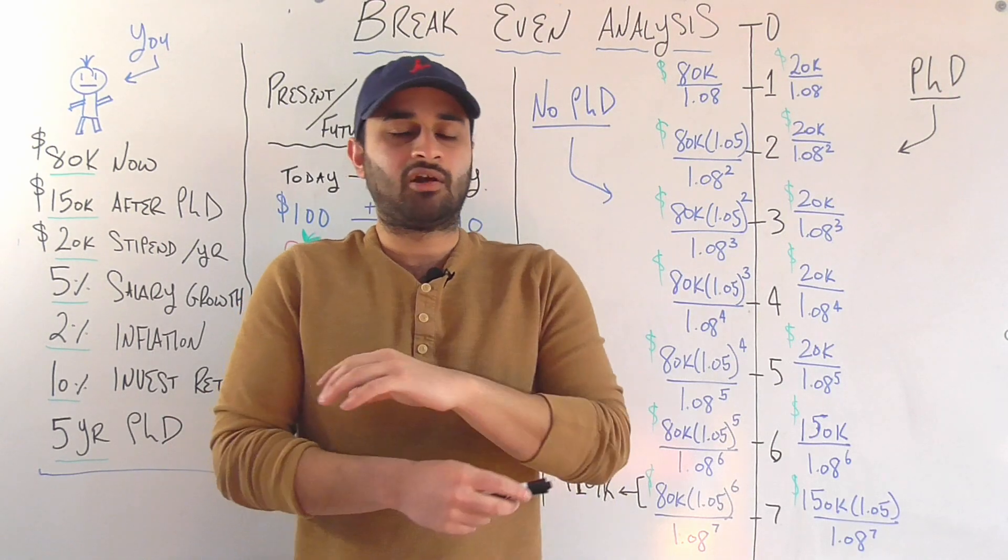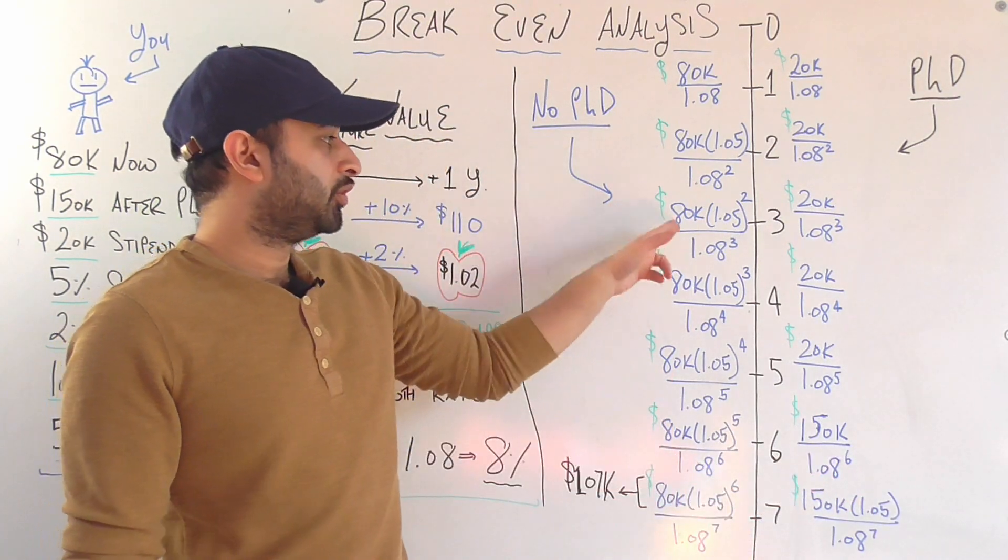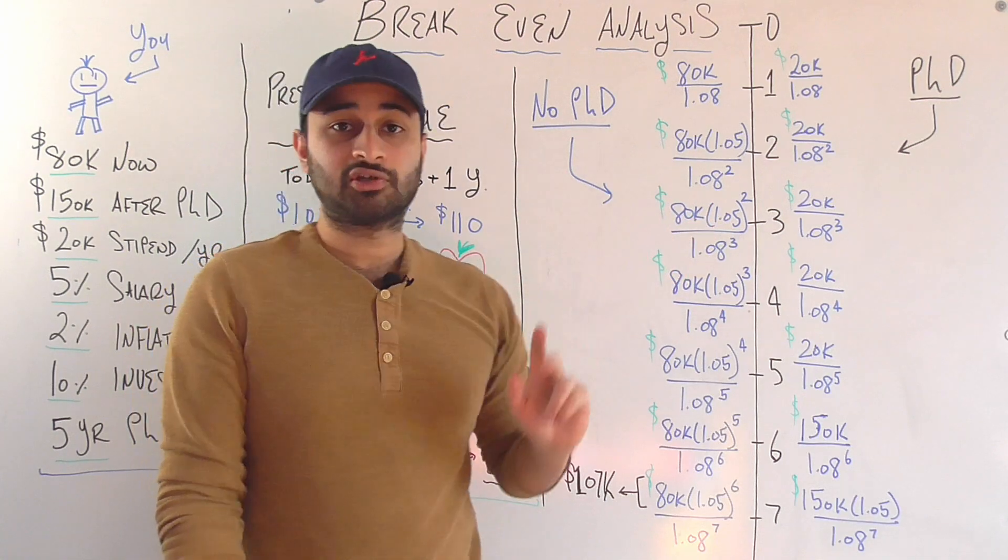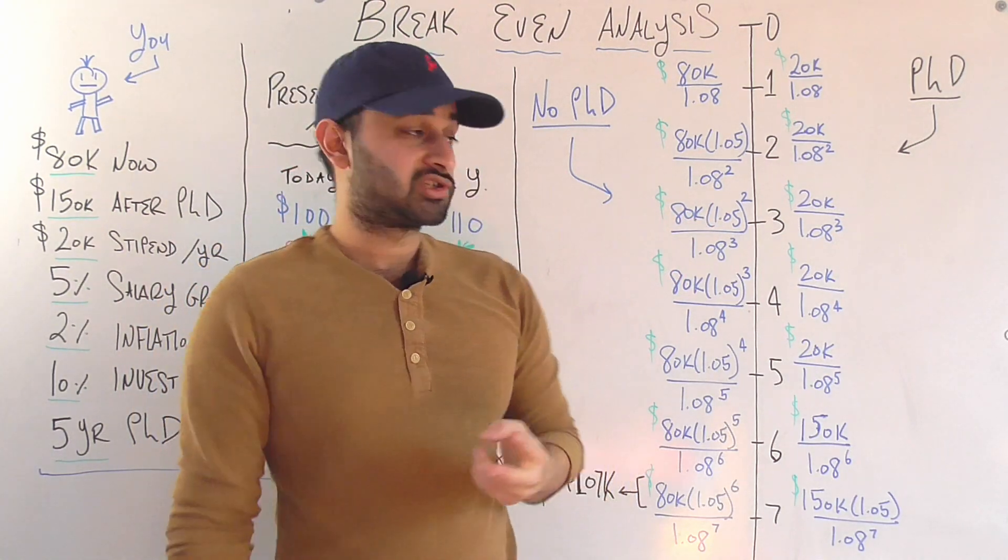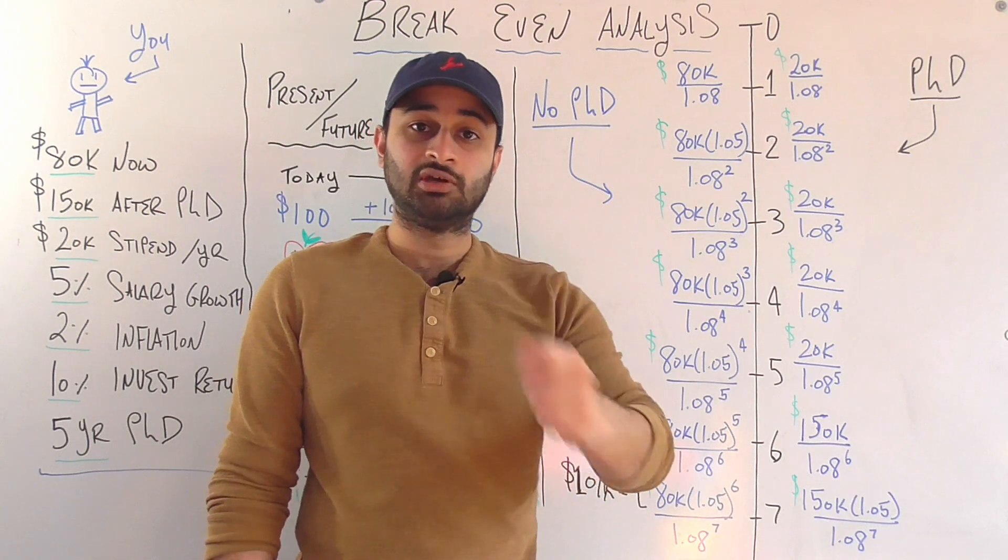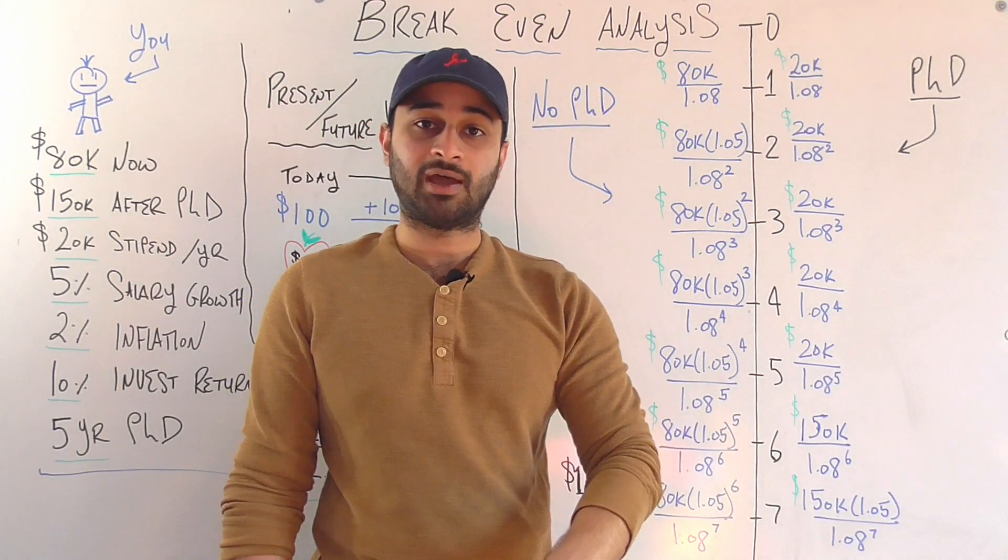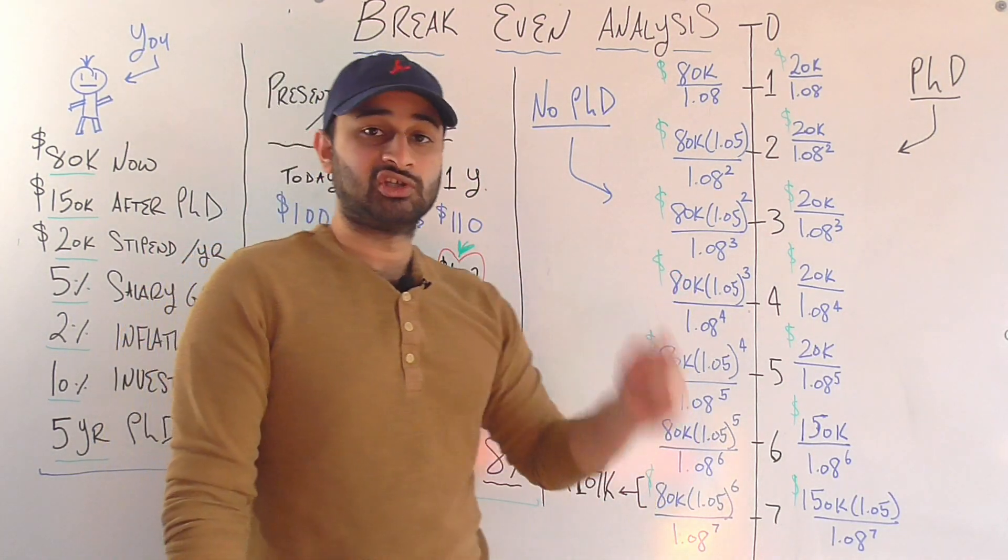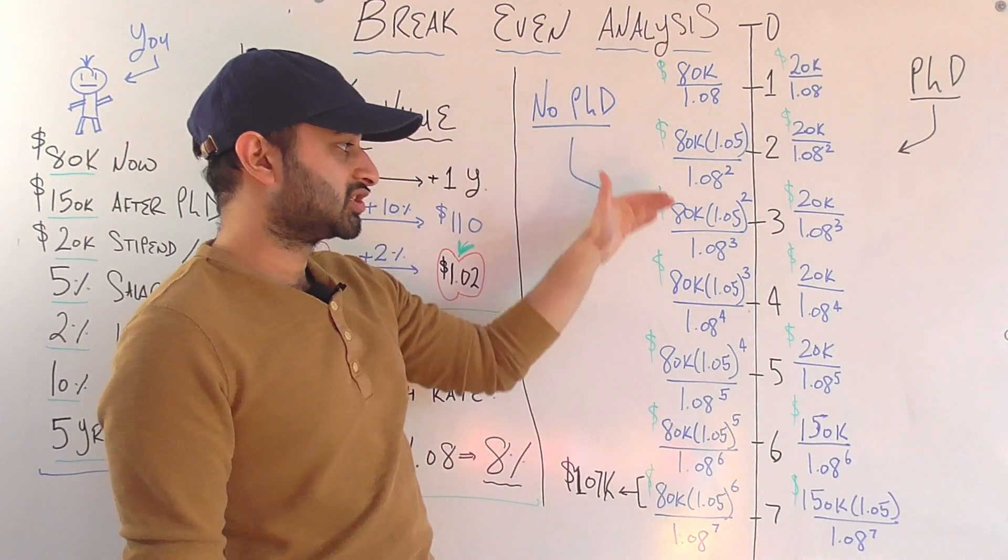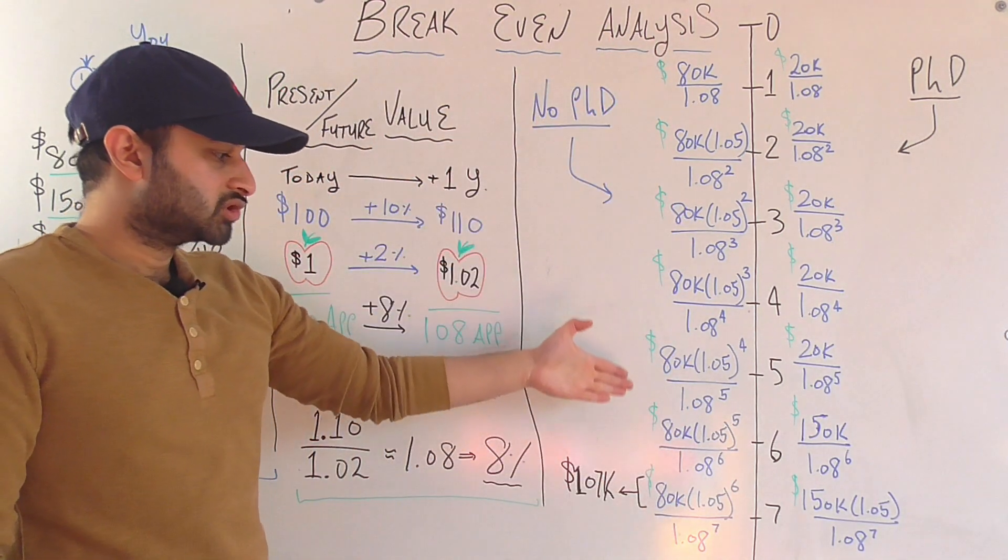And after you understand that, the pattern becomes very simple. If we look three years out, it's going to be $80,000. Two years worth of raises, so it's 1.05 squared. So 5% raise one year, another 5% raise after that. And now we divide by 1.08 cubed, because we're looking three years out. And that's how all of these values are calculated.